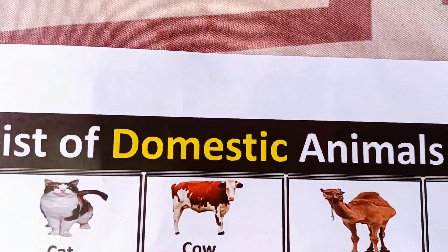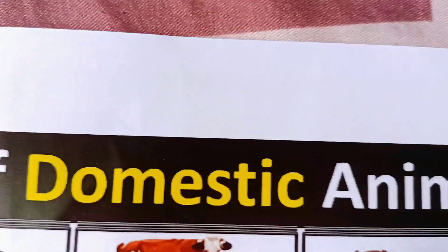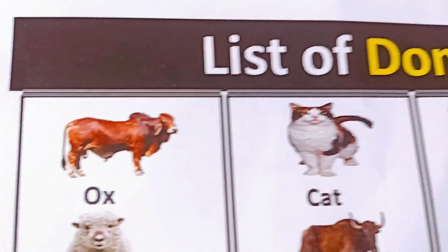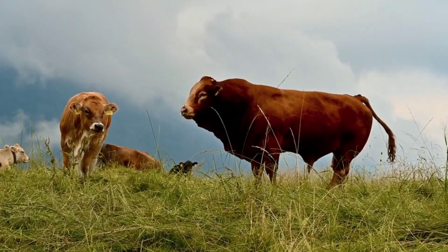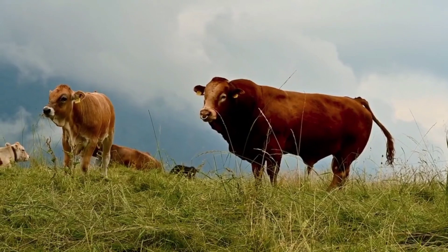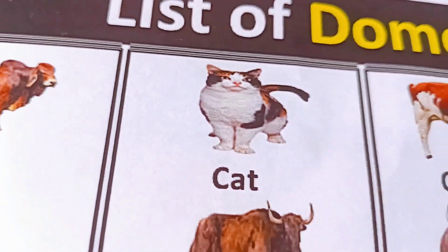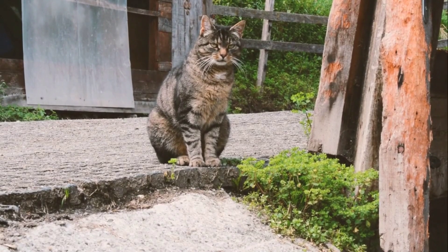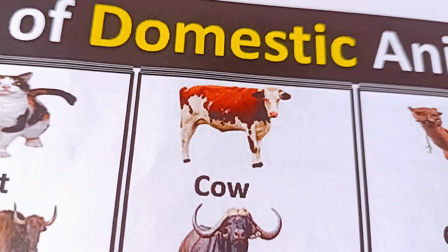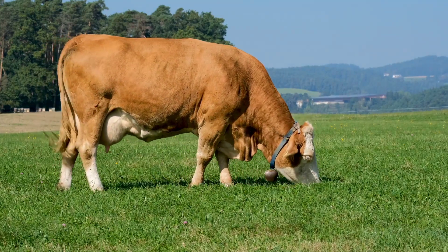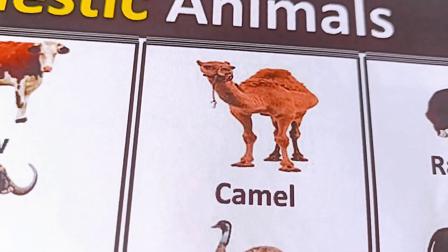Hi guys, welcome to the channel. Now we will learn domestic and wild animals names. First, list of domestic animals: ox, cat, cow, camel.